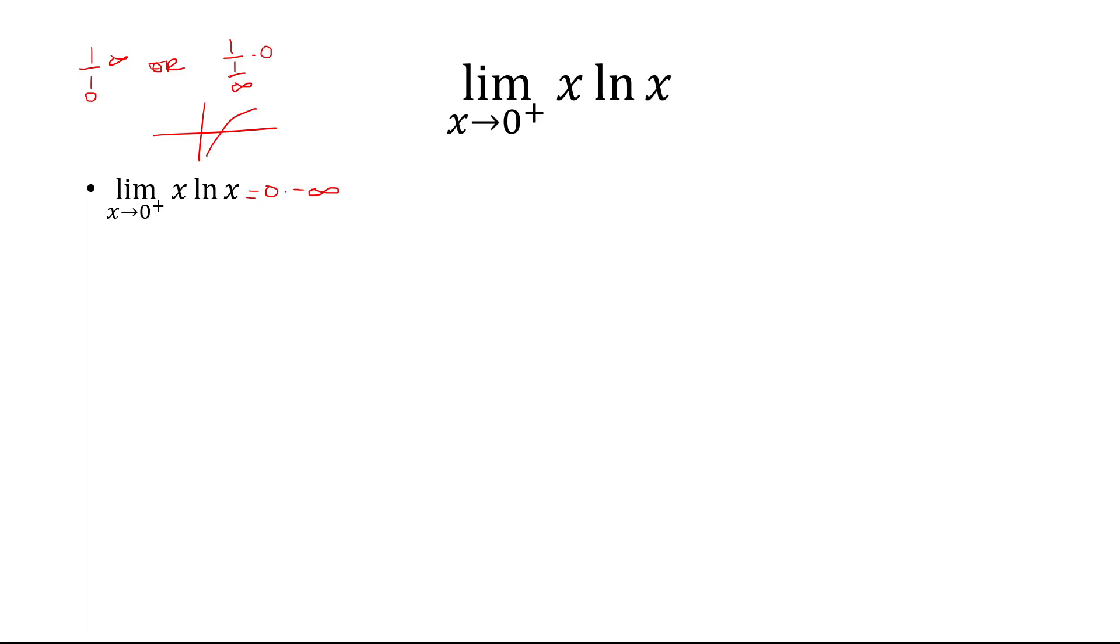Now what makes sense? Should we do 1 over 1 over x, or 1 over 1 over ln of x? Well, it's much easier to do 1 over 1 over x, because then you'll have to take the derivative of 1 over x instead of 1 over ln of x.